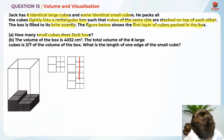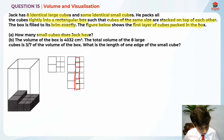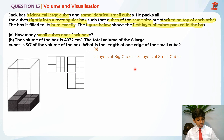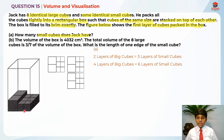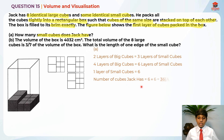Let's focus on the important rule. Two layers of the big cubes is equal to three layers of the small cubes. So four layers of big cubes equals six layers of small cubes. In order to find the number of small cubes, we need to know the total layers. There are six layers of small cubes, and in each layer there are six cubes — that's what the first layer shows. So the number of small cubes Jack has is six times six layers, which equals 36. So 36 is the answer for part A.